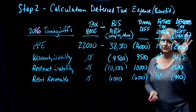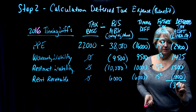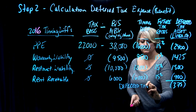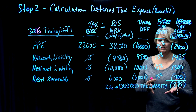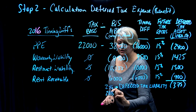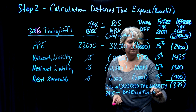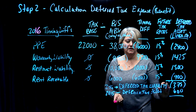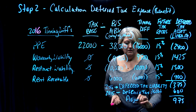Adding up all the deferred tax assets and liabilities, under IFRS we calculate the net value. We end up with a net deferred tax liability of $375 at the end of 2016 — that's what we want on the balance sheet. Our starting 2015 balance was a deferred tax asset of $600, so we need a journal entry to reverse that asset and set up the liability. The effect of that journal entry is a deferred tax expense of $975.